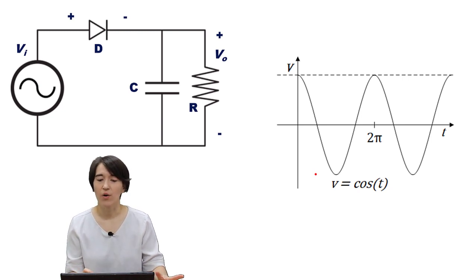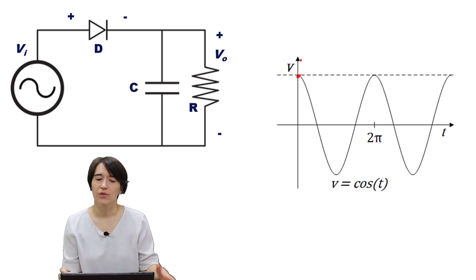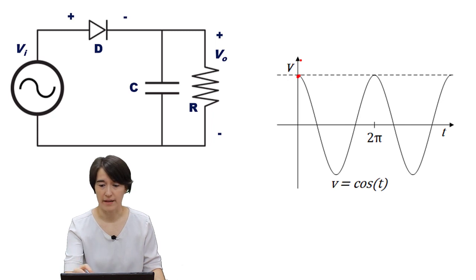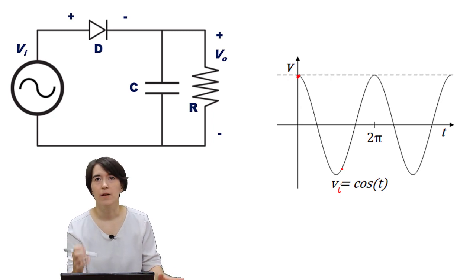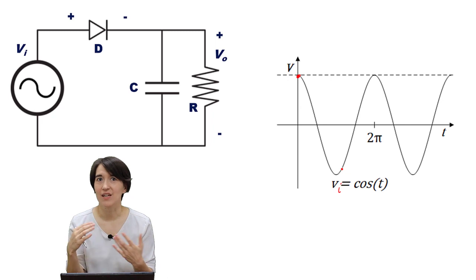Here now we've hit this peak point and I'm showing it in the graph on the right. So we have this peak point and now the input voltage is going to start going down. This graph here is V_i, it's a cosine, so that voltage is going to start going down. But the voltage of the output V_out is actually going to stay higher, and that's because the capacitor is storing charge.